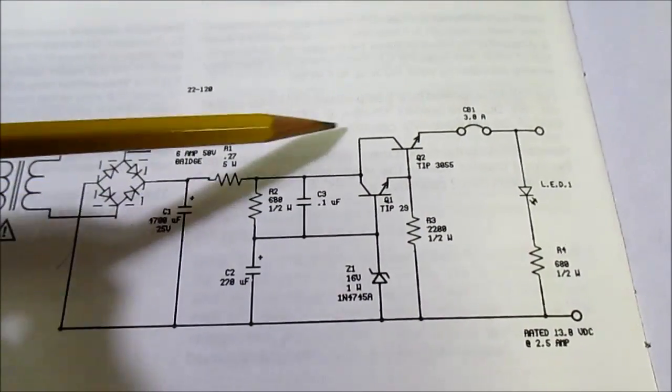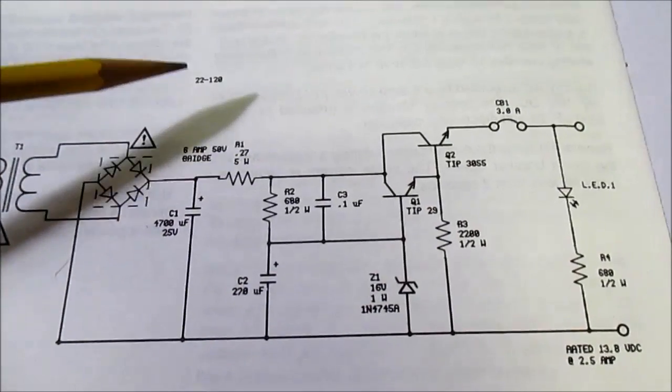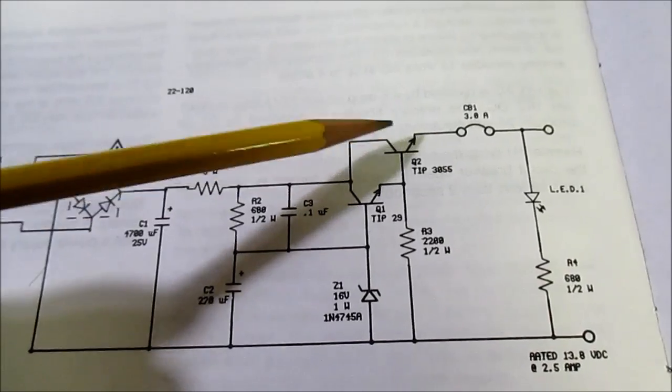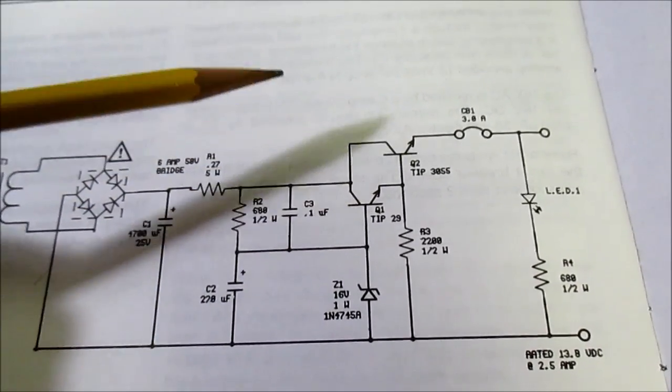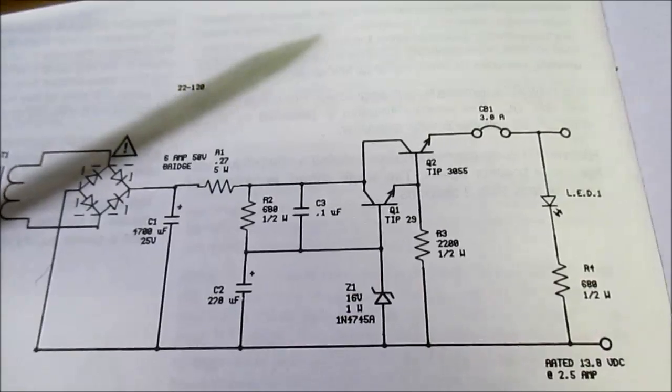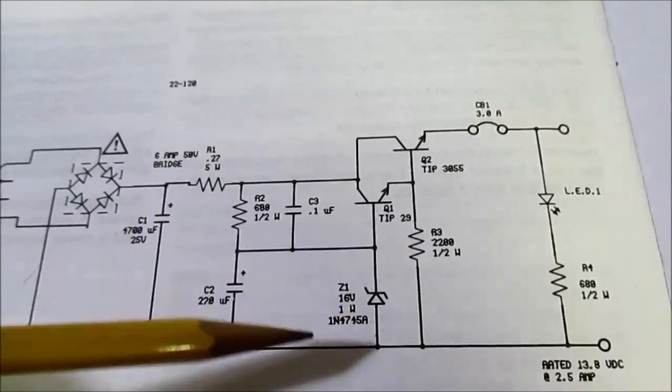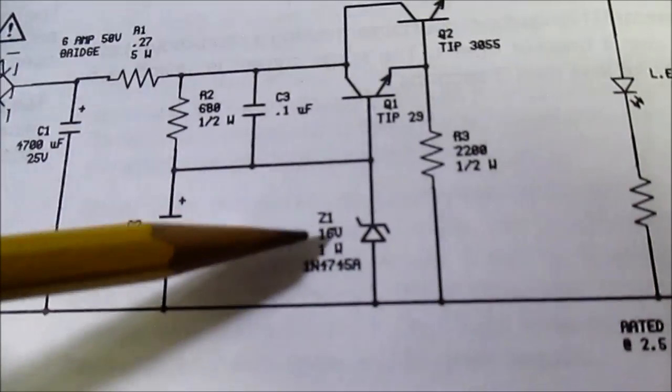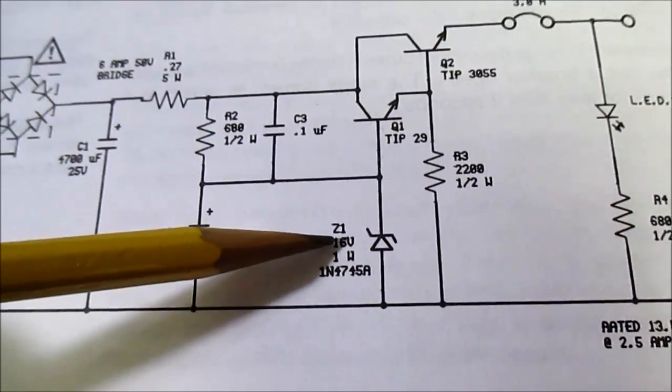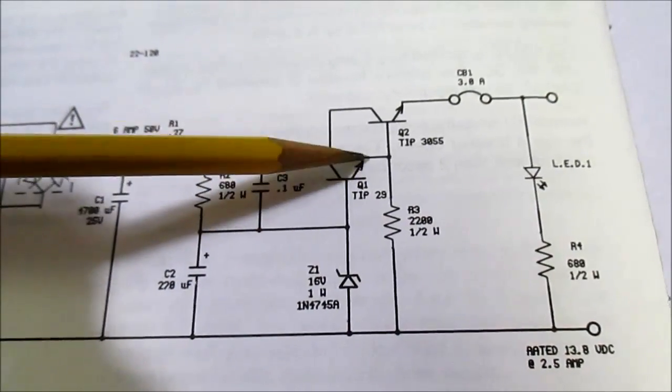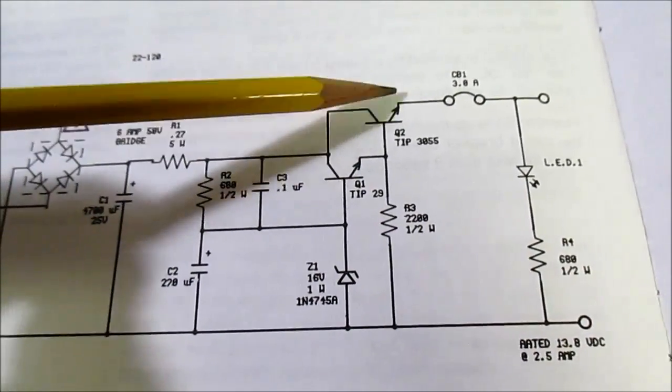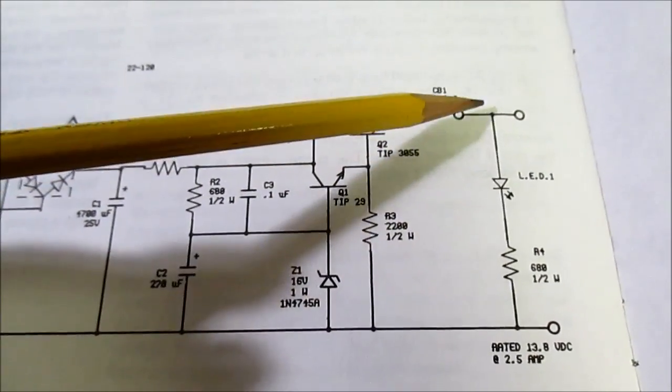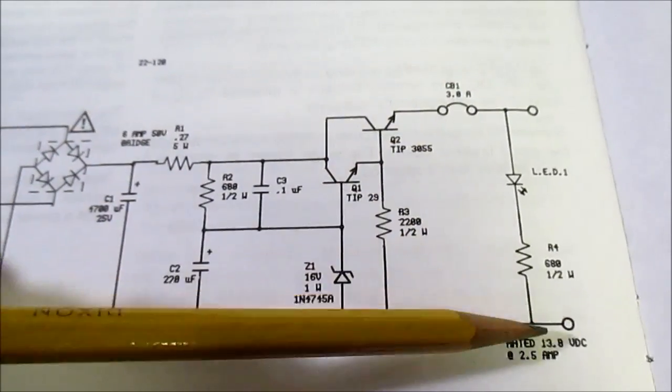So this section here is the actual voltage regulator. This is your typical emitter follower Darlington type circuit. Of course emitter followers have no voltage gain, it's all current gain. So you take your voltage reference which they're using a Zener diode and it looks like it's 16 volts. And you have a couple diode junction drops with the transistors and it ends up around 14 and a half or so volts.